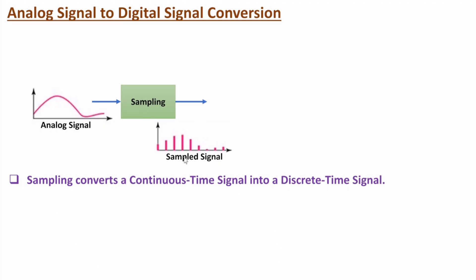You can observe that we have a sampled signal that is a discrete time signal. By sampling, at well-defined time intervals, we take samples of the analog signal. So after well-defined time intervals, we have the sampled signal. The first step is sampling, converting continuous time signal into discrete time signal.